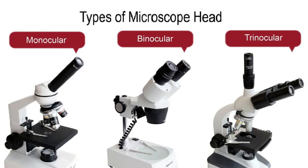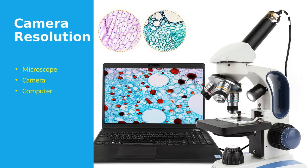Then there's the trinocular. The negative is that it's the most expensive, but it's the most versatile — it has all the benefits of the binocular plus a dedicated camera slot. You can find trinoculars on Amazon that aren't much more expensive than a binocular or monocular. The key issue is the resolution of the camera, which is really what drives cost. That's something that's genuinely important to understand.